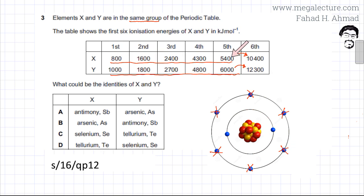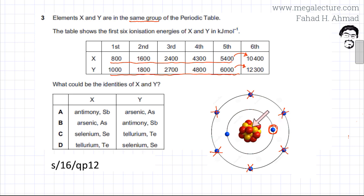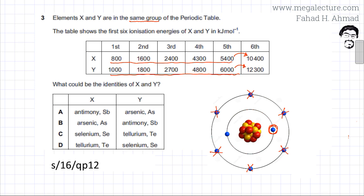When removing the sixth electron, it belongs to an inner shell, so it is closer to the nucleus and more strongly attracted to it. It also has less shielding since there are no inner shells between it and the nucleus. This means the sixth electron is directly attracted to the nucleus, making it much more difficult to remove.